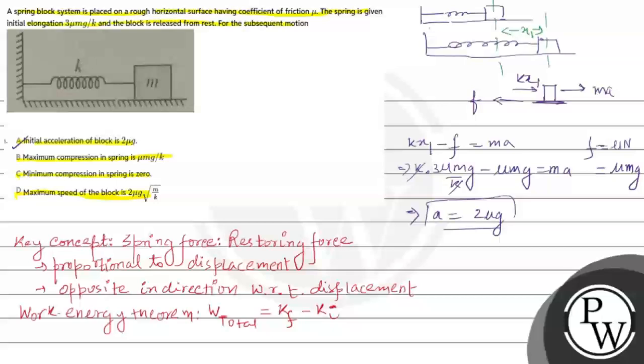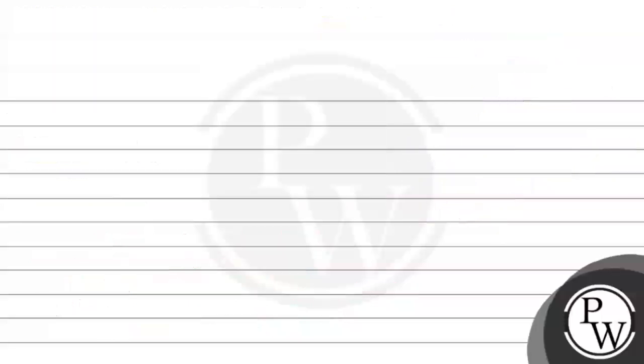Now let's check the options and we can clearly see option B is also correct. So option C is incorrect because it is given minimum compression in spring is zero, that is not true. Let's check option D now, whether the maximum speed of the block is 2 mu g times root m by k.